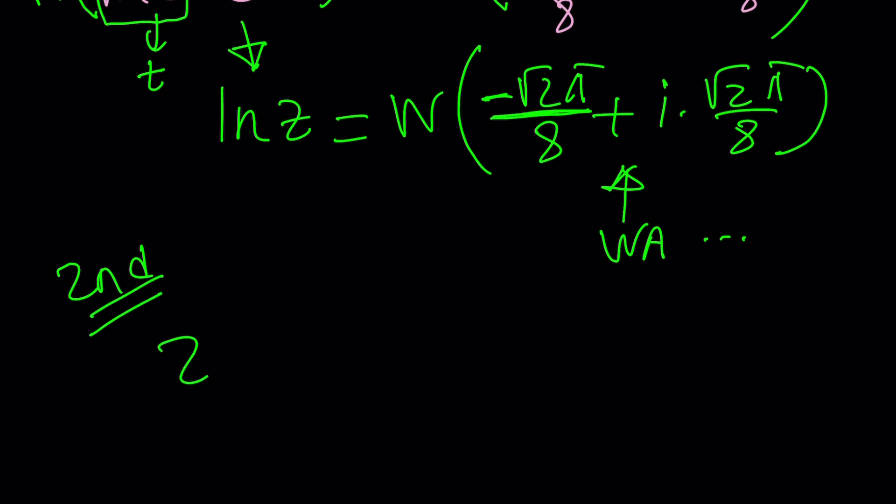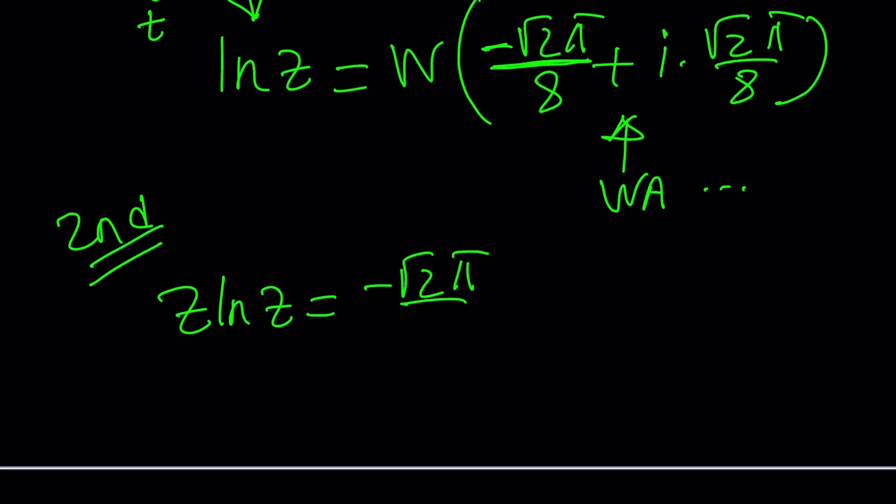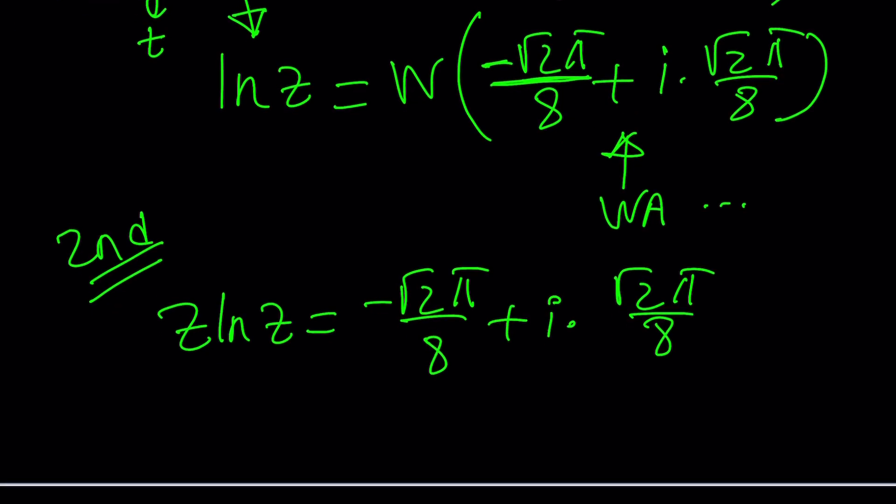So here's what we have: z ln z equals negative root 2π over 8 plus i times root 2π over 8. Have you noticed that the real part and the imaginary part on the right hand side, their absolute values are equal? That tells me we have something like -a + ai, which means if you look at the tangent of θ, the argument of the right hand side, you should get negative 1, which tells you we're dealing with multiples of π/4. I have a π/8 in the equation, so that should be a good sign that you should do something about it.